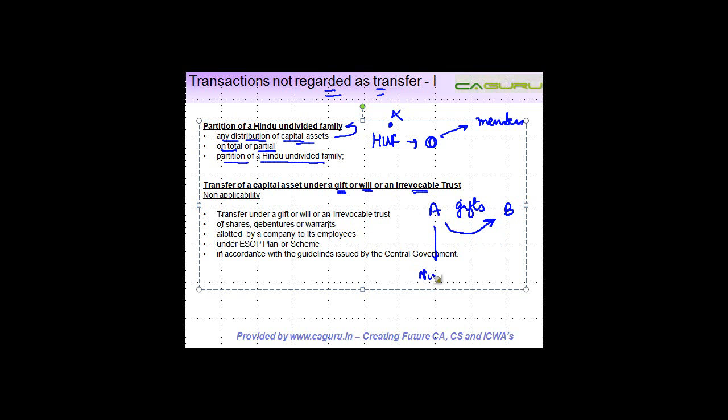Similarly if A is the father, B is the son. A leaves all his assets behind after he expires. Under the will B will get it, then also there is no tax because the movement is happening under the will.